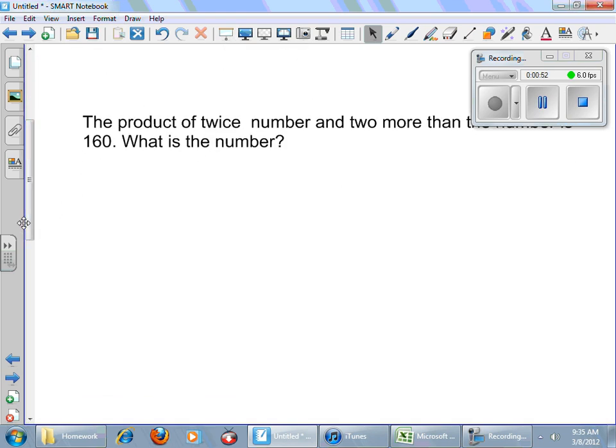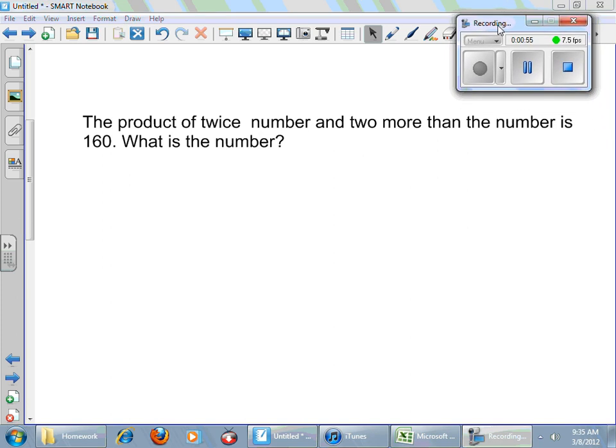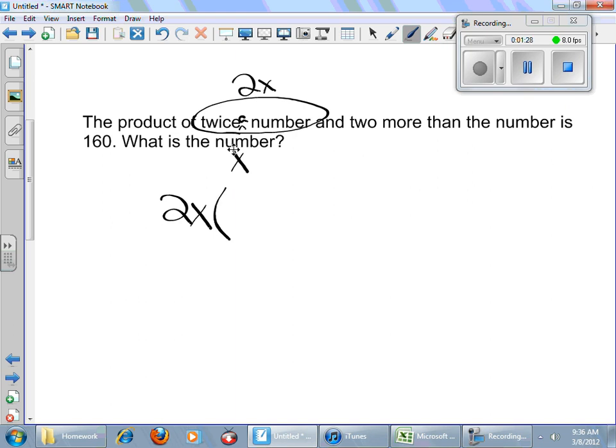Okay, the first one is the product of twice a number and two more than a number is 160. What is the number? Well, let's see here. I know the number is x because I don't know what it is, right? But I need twice a number. Let me put an a in there because I'm sure Andrew will tell me about that. The product of twice a number and two more. So twice a number, that would be 2x, wouldn't it? I need product, so I know I'm going to multiply this 2x by something. I need two more than the number. Well, that would be x plus 2. The product of these two numbers is 160.